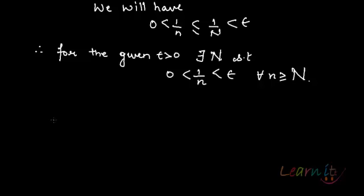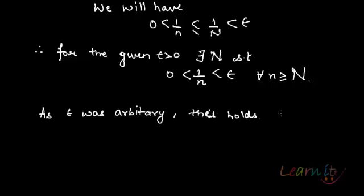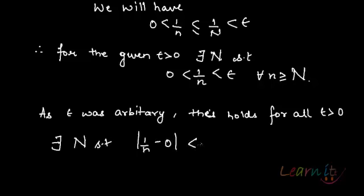So we have made use of the Archimedean property to reach here. And as epsilon was arbitrary, this holds for all epsilon greater than 0 — that there exists an N such that |1/n - 0| is less than epsilon for all n greater than or equal to this capital N. That's how you prove using the epsilon definition any problem in sequences.